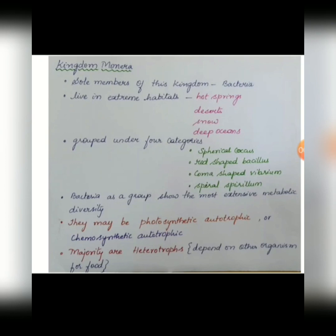Under Kingdom Monera, bacteria are the sole members. They live in extreme habitats such as hot springs, deserts, snow, and deep oceans. Kingdom Monera is grouped into four categories based on the shape of bacteria: cocci (spherical), bacilli (rod-shaped), vibrio (comma-shaped), and spirillum (spiral-shaped).